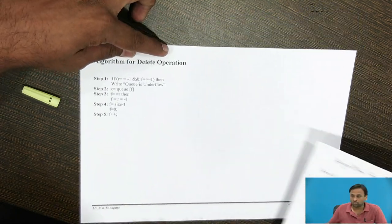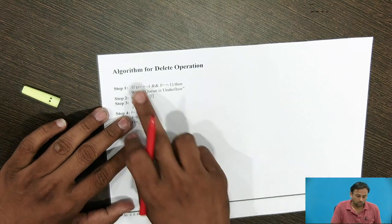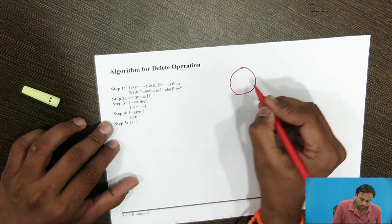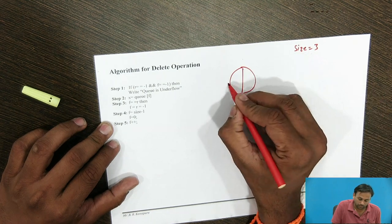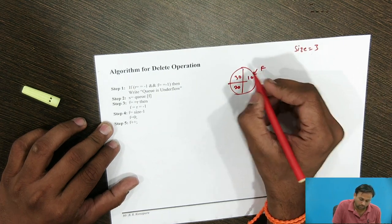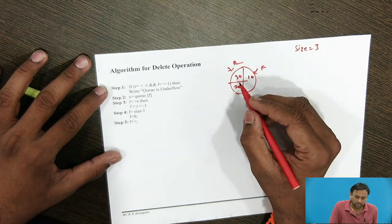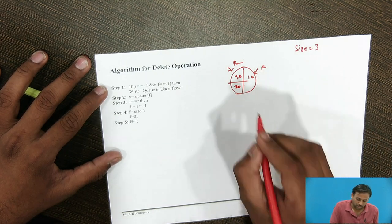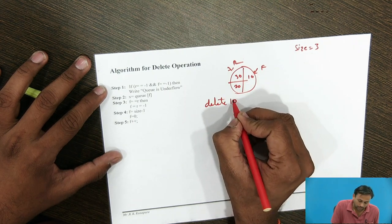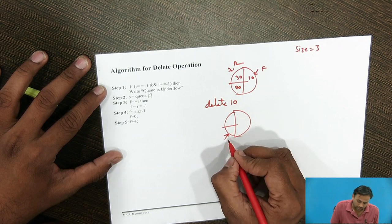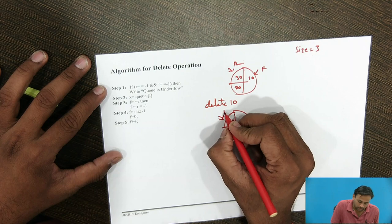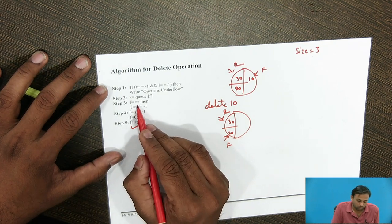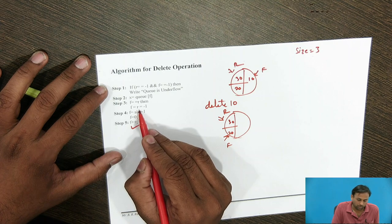Now we look at the algorithm for the delete operation. For delete, we check the empty condition. With size 3, the queue contains 10, 20, 30 where F points to the front and R to the rear. To insert, we increment R; to delete, we increment F. If we delete 10, F moves to position 1, leaving 20 and 30. F++ is used. When F == R, we reset R = F = -1.